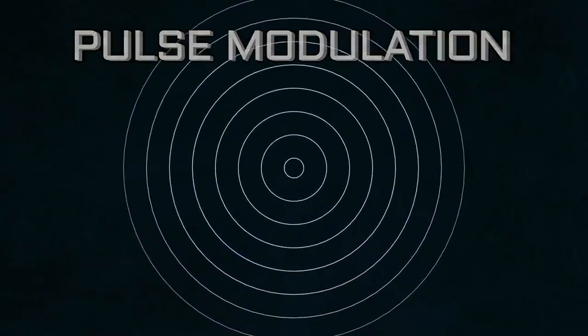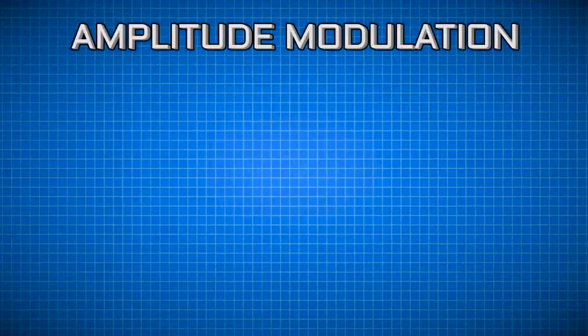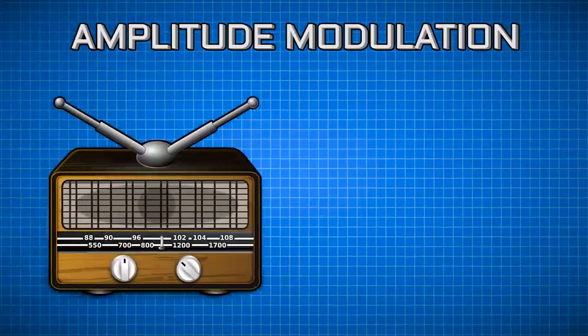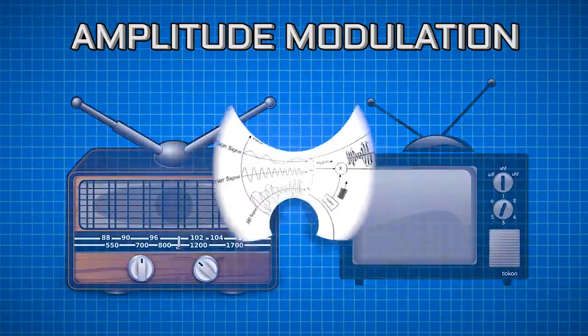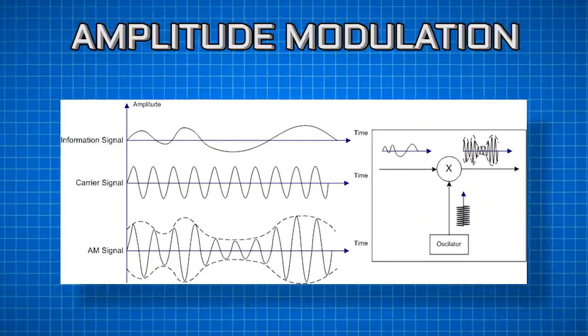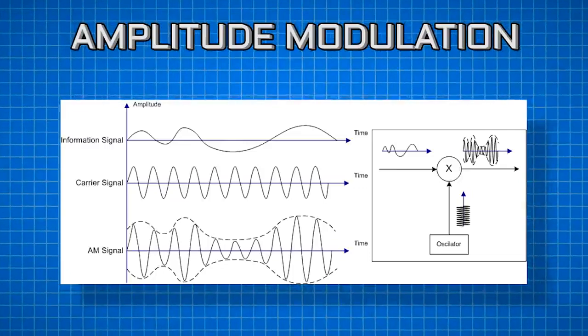Amplitude modulation, on the other hand, is what is utilized by AM radio stations and TV signals to encode data. In this format, the amplitude, or peak-to-peak voltage, of the wave is changed.